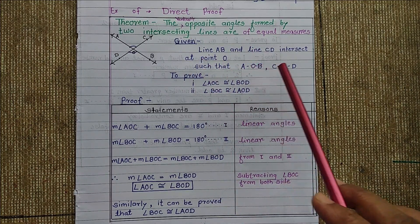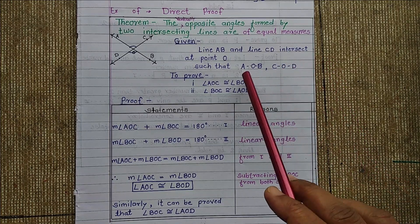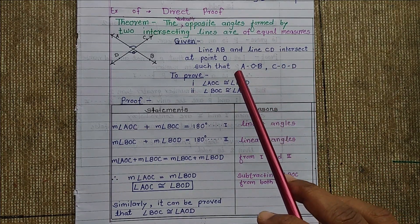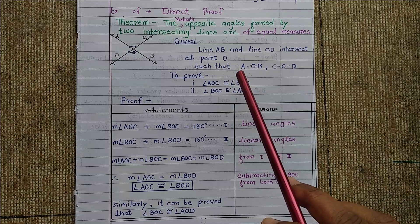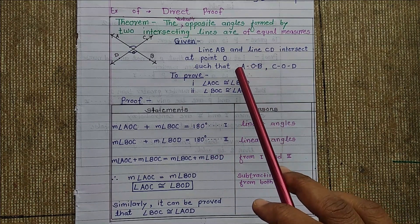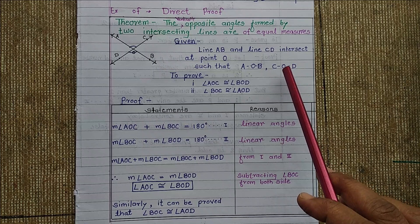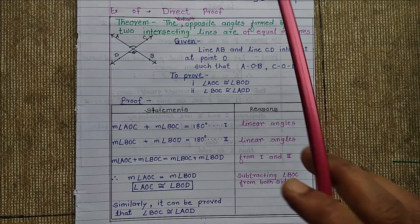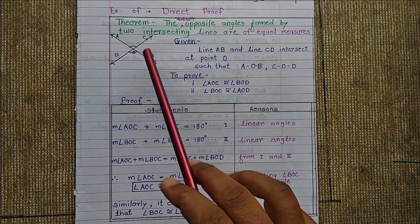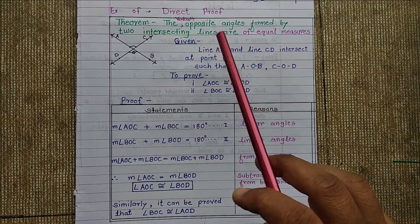Such that A-O-B and C-O-D — meaning point O is between A and B, and point O is between C and D.